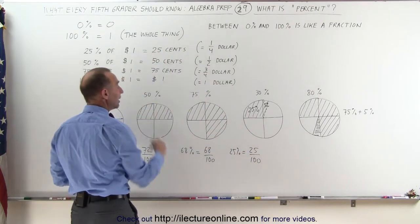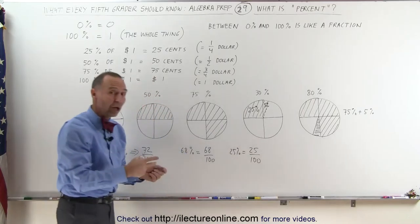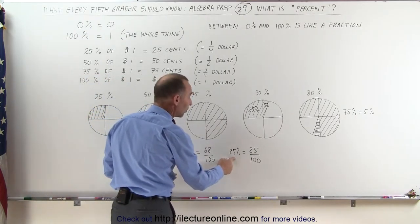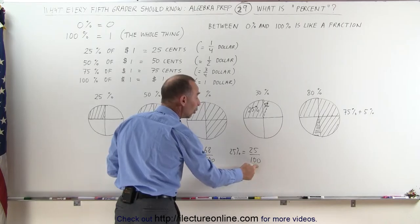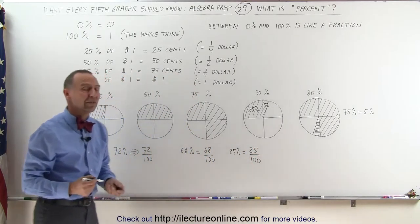And tying that back in with the money, remember that 25% of a dollar was 25 cents? Well, 25% of a dollar is 25 divided by 100 or one quarter of a dollar or 25 cents.